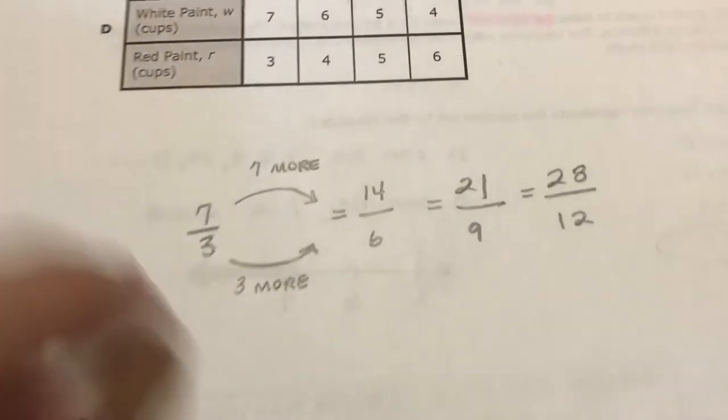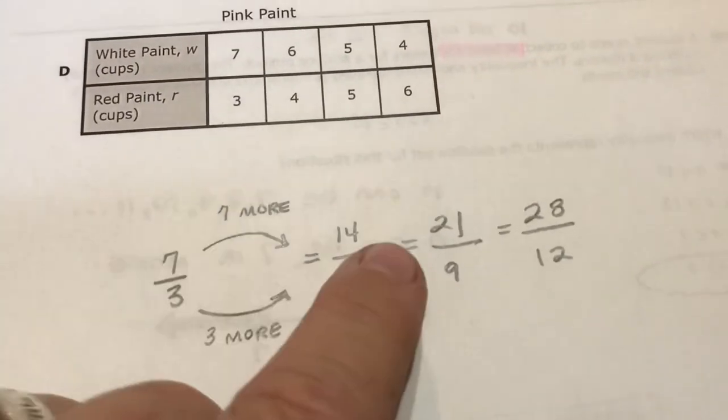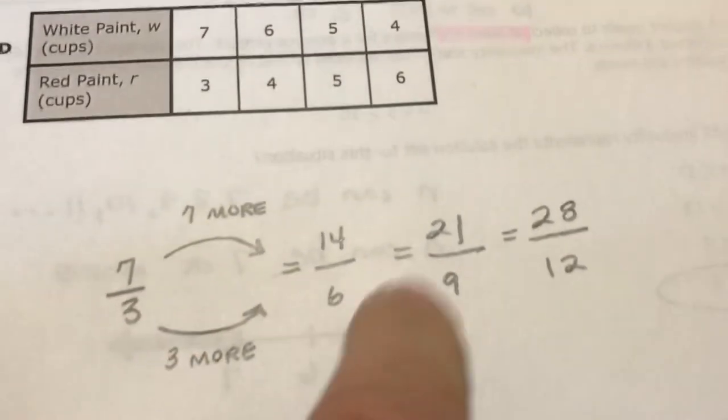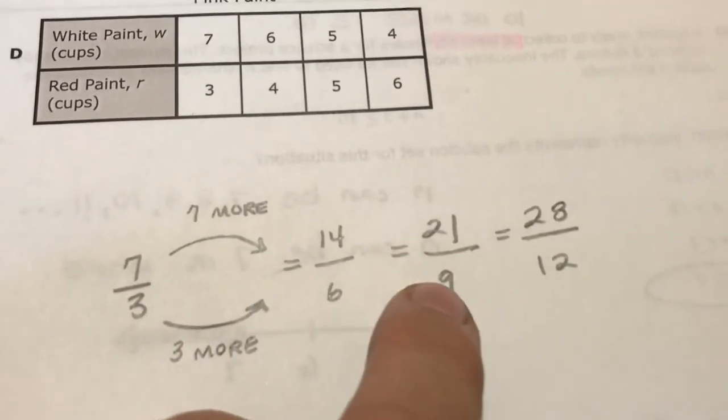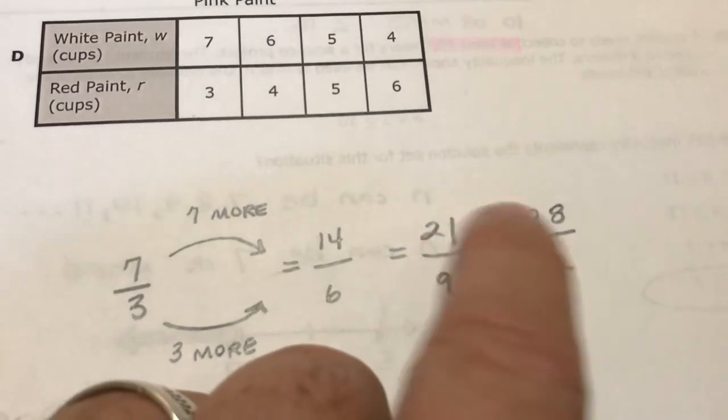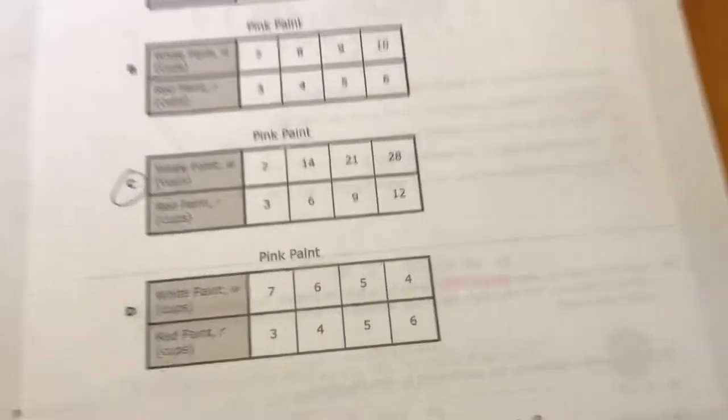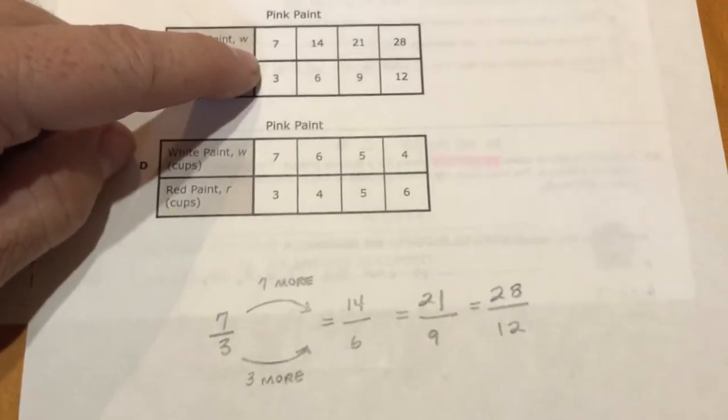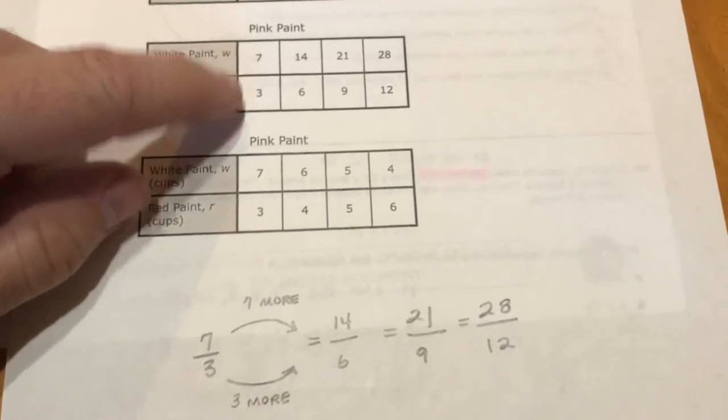So here it is: 7 more white, 14. 3 more red, 6. 7 more, 21. 3 more, 9. 12. And there's only one table that has that same information of 7 to 3, 14 to 6, 21 to 9, 28 to 12.